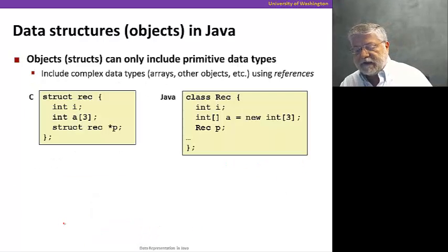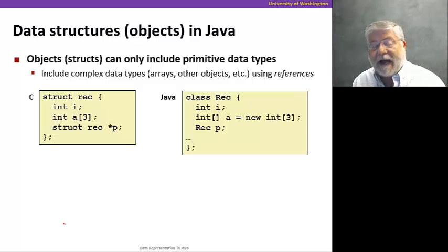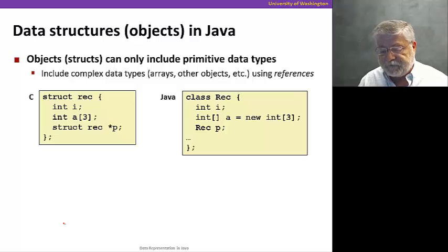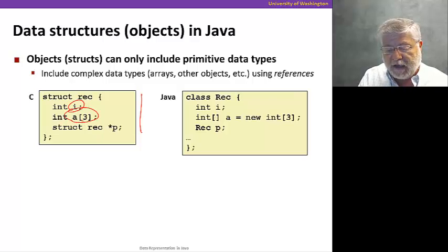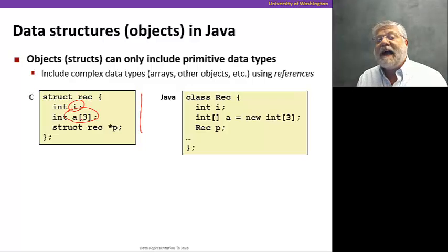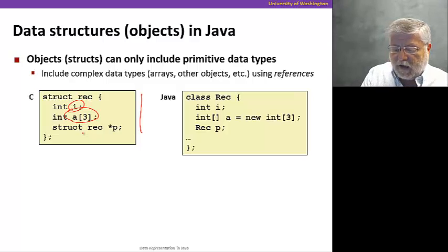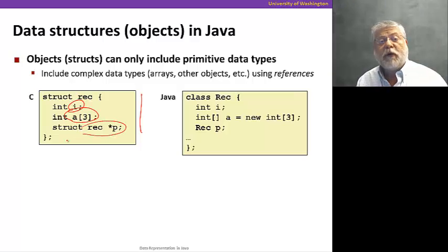Okay, let's take a look at data structures in Java, or objects as they're referred to. The difference between structs in C and objects in Java is that objects can only include primitive data types, not composite data types. So for example, you'll remember maybe this example that we used before. Here we have a struct that has an integer as its first element, and then an array of three ints as its second element. That's not a primitive structure or primitive data type. That's a composite data type. It actually consists of three integers. And then another primitive data type that is a pointer.